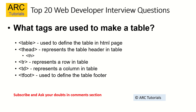What are the tags used with HTML tables? You should mention: table, which defines the table; thead, which represents the table header using the TH tag; TR, which defines table rows; TD, which defines a column in the table; and finally tfoot, which defines the table footer. Make sure to mention these tags whenever you are asked about HTML tables.